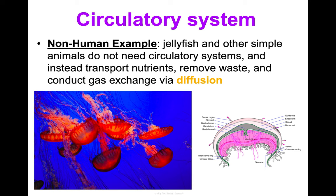The endocrine system goes hand in hand with the nervous system. Its main function is the production and secretion of hormones for regulating the body — including growth, metabolism, and sexual development. As we discussed in Concept Two on signaling and communication, hormones are huge for signaling, as are neurotransmitters from the nervous system — so these two really work together to allow signaling and communication and maintain homeostasis. Key structures include the hypothalamus and important glands like the pituitary gland, adrenal gland, and thyroid.